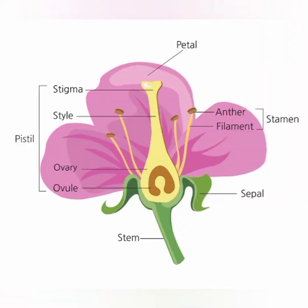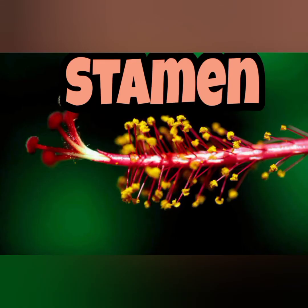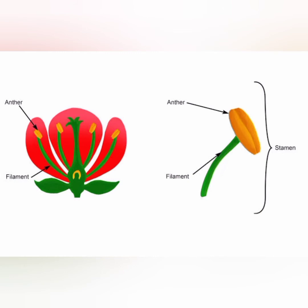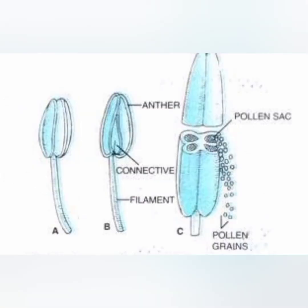If we remove sepals and petals, we can see the next part — the male part, or male reproductive part — that is the stamen. Each stamen consists of two parts. A thin, long, thread-like portion is called the filament. A swollen or knob-like structure at the tip of the filament is called the anther. The male gametes, pollen grains, are produced in the anther.